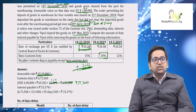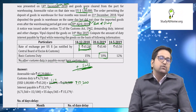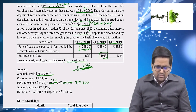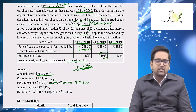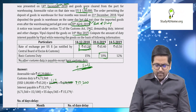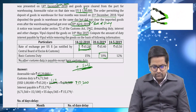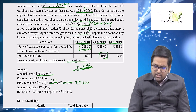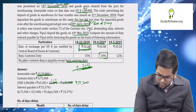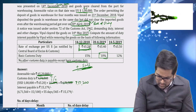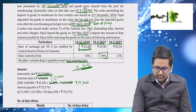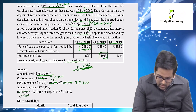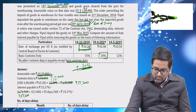BCD is 10 percent and 10 percent of 10 percent for SWS is 1 percent, totalling 11 percent. You can also calculate them separately in two steps. The custom duty comes to ₹7,17,200.